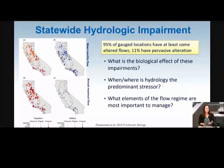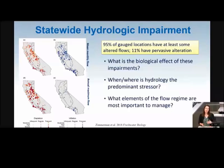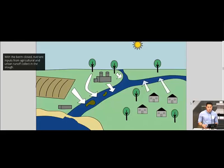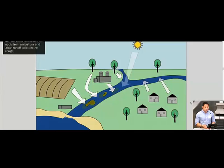We're trying to put functionality back into our river systems and create multiple benefits. One of the premises behind our approach is the idea of restoring seasonality to our flow regimes as best we can. With the berm closed, nutrient inputs from industrial, agricultural, and residential runoff collect inside the slough.